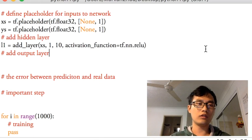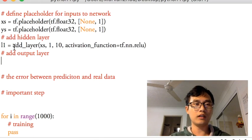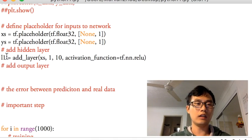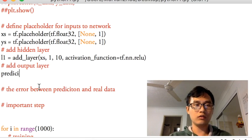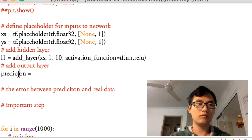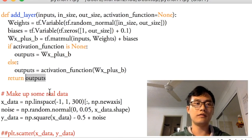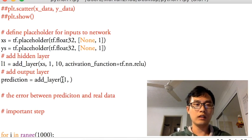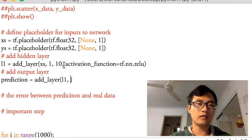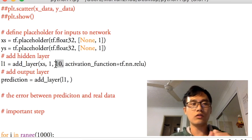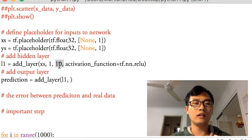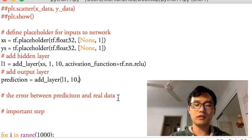And what else? I am going to add an output layer. And the output layer, for the input of output layer is the output of layer one. So the prediction for the output layer is add_layer. And this layer's input is L1. And the L1 is the output that returns from this function. And as you remember, the neurons in L1 is 10. So this is the input size, 10.